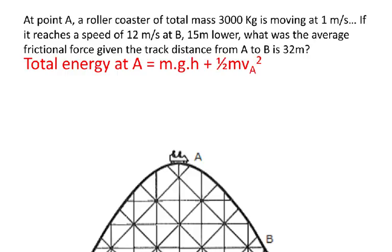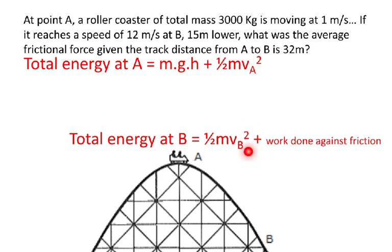So again, thinking about the total energy at A, it's equal to the gravitational potential energy plus the kinetic energy. The total energy at B is going to equal the kinetic energy at B plus also the work done against friction. And by the conservation of energy, the total energy at A must equal the total energy at B, so we can formulate this equation.